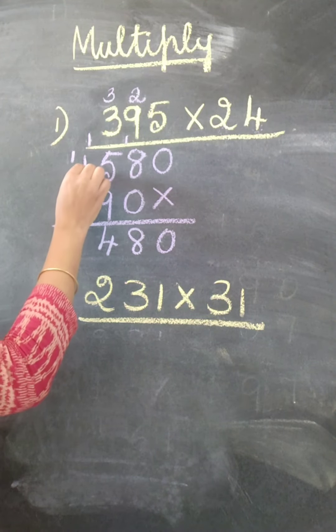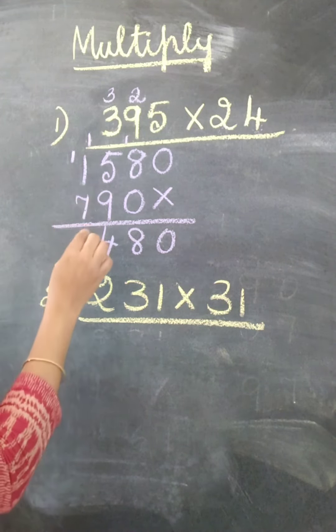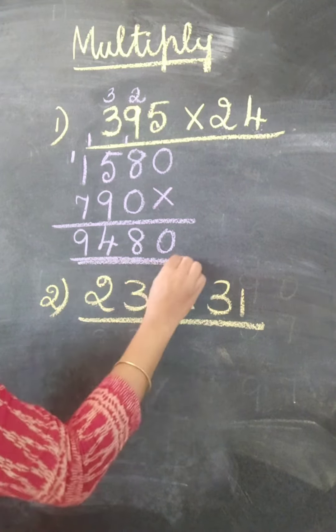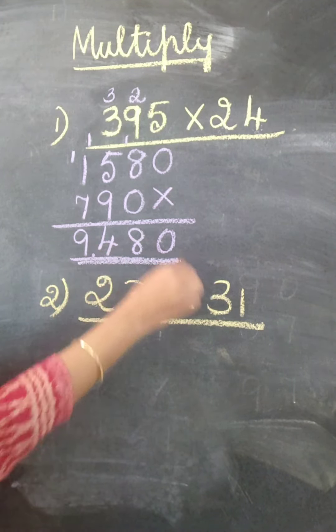1 plus 1 is 2, 2 plus 7 is 9. So the answer is 9,480.